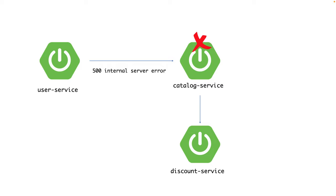You might ask: can't I just use try-catch in user service and return an error response to the end user? But that is not the solution in the microservice world. Intermittent failures are common, so we can't predict that catalog service will be down for a long time. Rather than stopping all requests, we can set a threshold — we'll wait for a few more calls, and if the failure rate exceeds that threshold, then we'll stop allowing calls to that microservice. For example, if the failure rate exceeds 50 percent, we'll immediately stop processing requests.